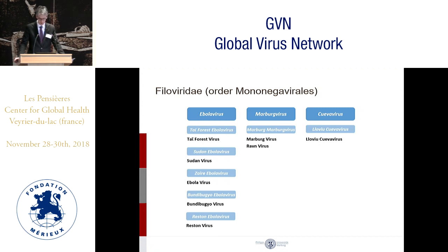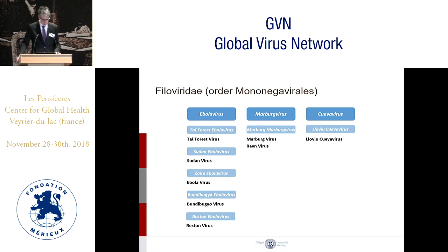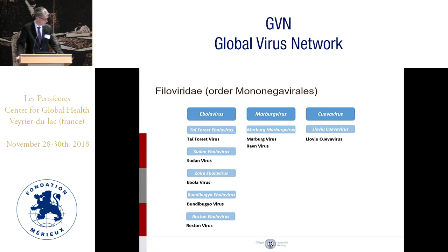Interestingly, this Cueva virus has been identified in Spain and not in Africa, where usually these filoviruses are present. It has been identified in a cave in Spain, and therefore it's called Cueva virus. So while we think that filoviruses are mainly of African origin, there are some exceptions — one being this Spanish Cueva virus, and there's also the Reston virus, which is found in the Philippines.